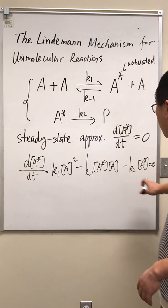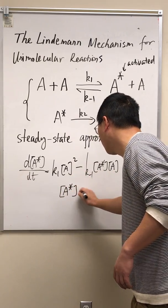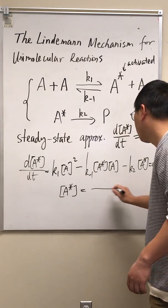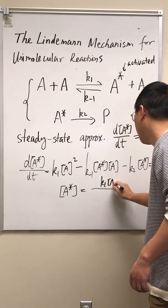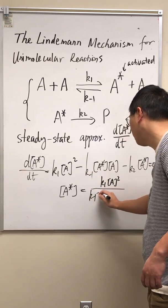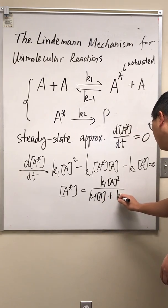If this is zero, we can just get the expression for A star easily. It's going to be K1 times A squared on top, and on the bottom you have K minus 1 A plus K2.